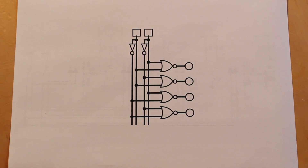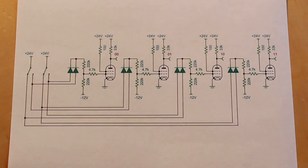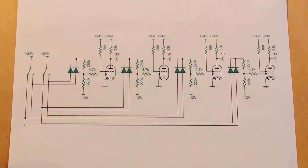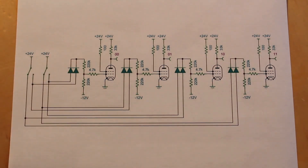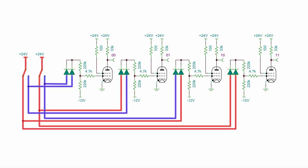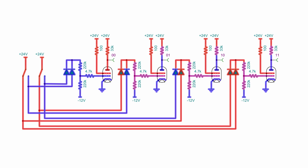Doing that is quite an involved process, so before we do that we should test this concept. This schematic has four vacuum tubes set up as two-input NOR gates using two diodes each. For the input, instead of an inverter I'm using a three-position switch with 24 volts into the center pin, and the left or right pin gives inverted or non-inverted outputs. It's a simple design: a 33kΩ plate resistor, 100Ω screen grid resistor, 4.7kΩ control grid resistor, and two 220kΩ resistors for the voltage divider. Let's build it on the breadboard and give it a quick test.